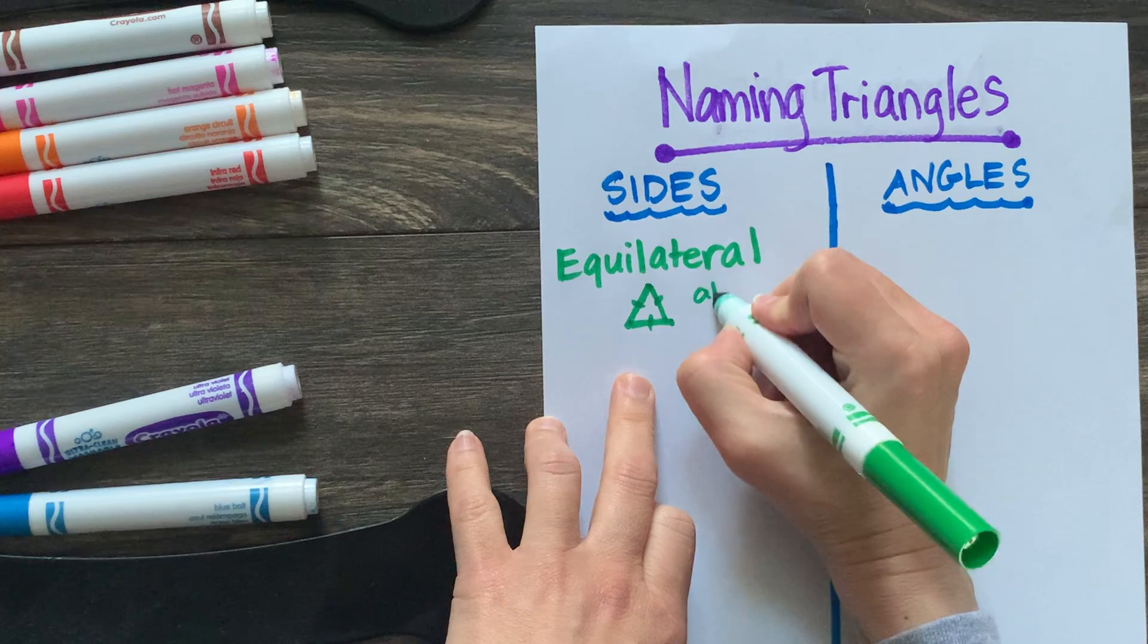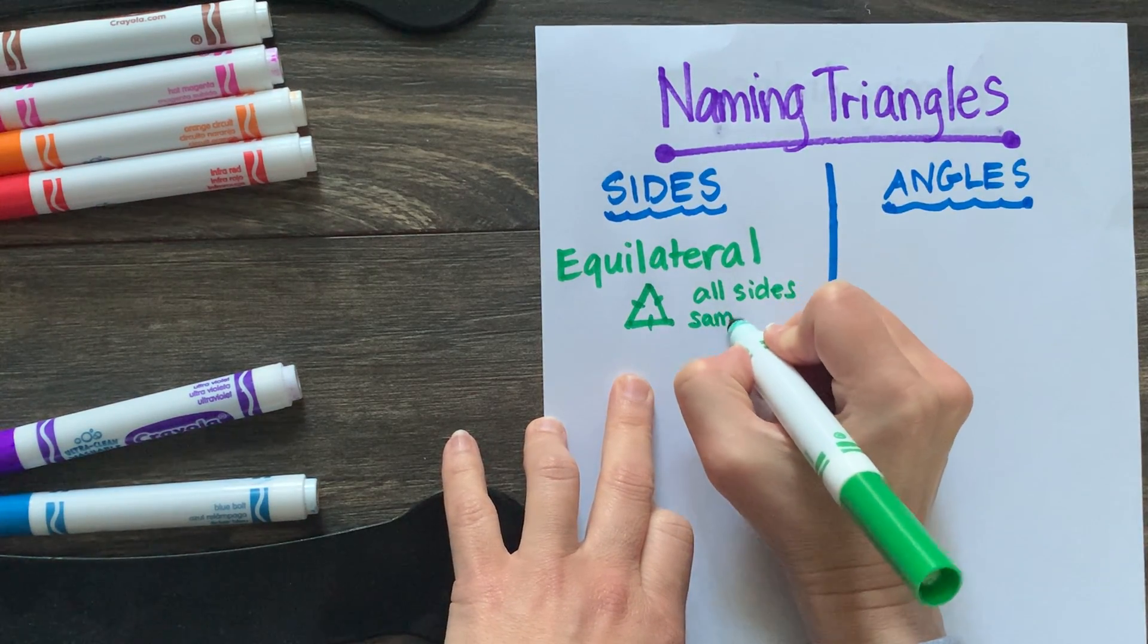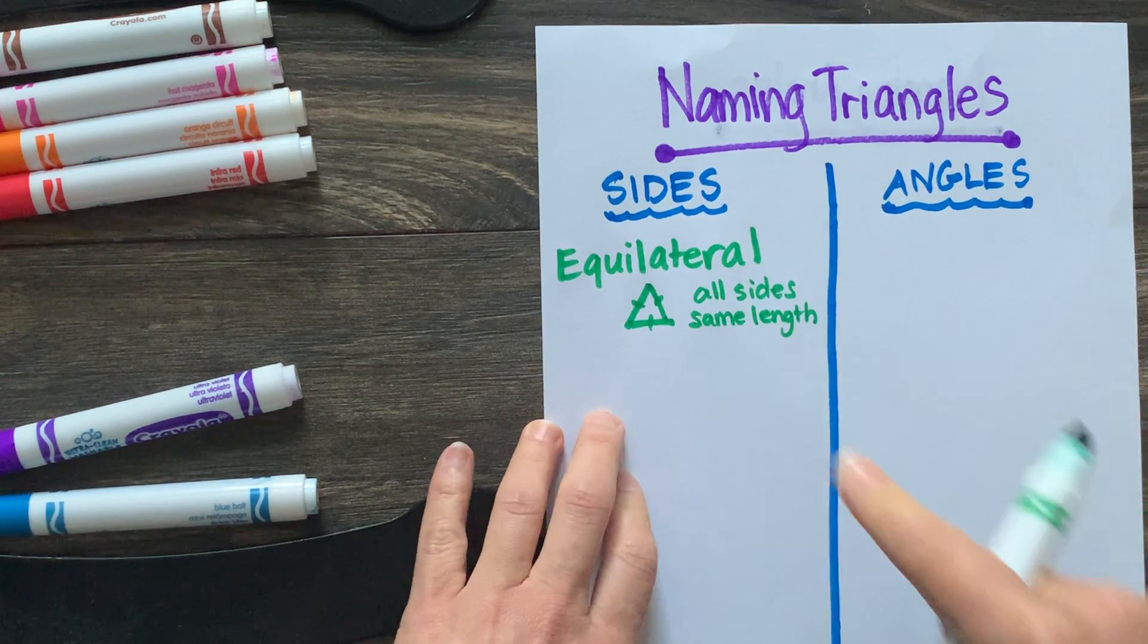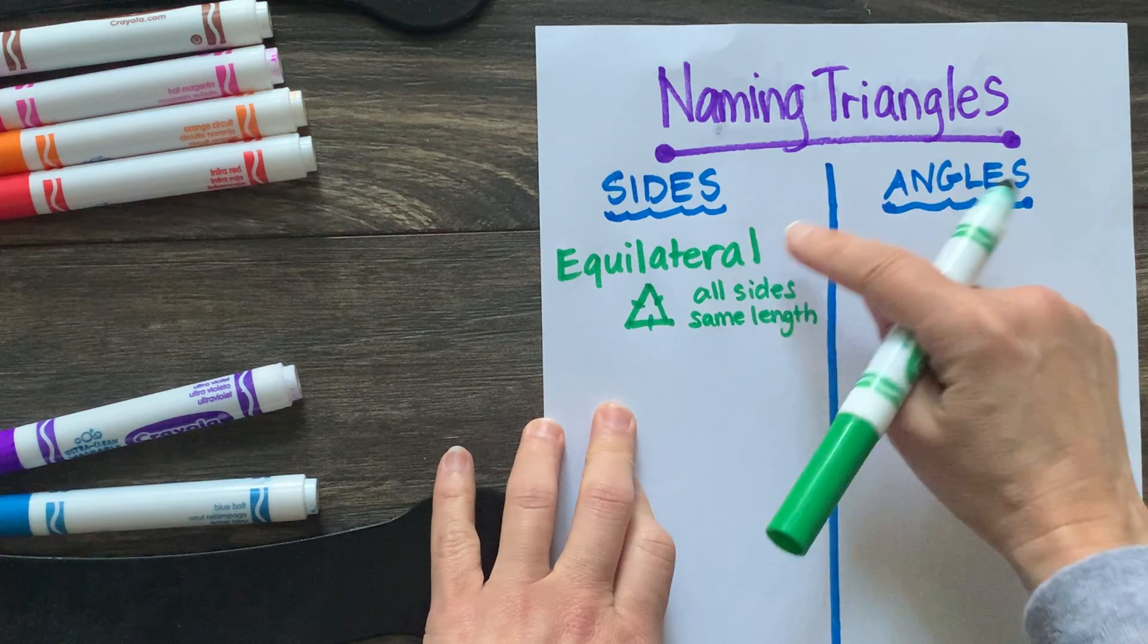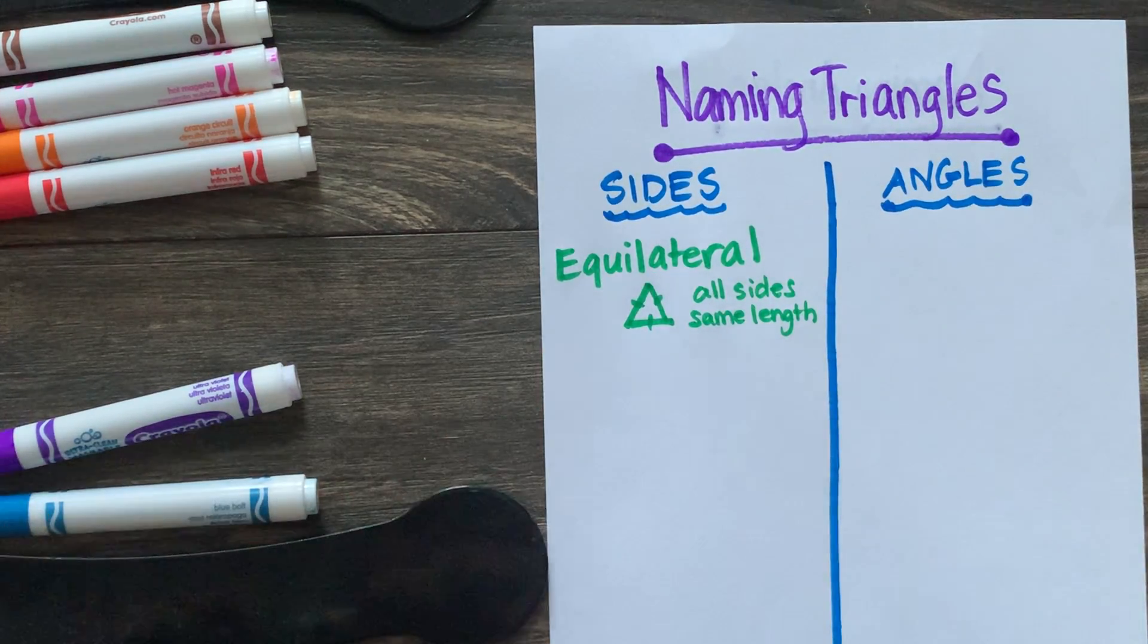So an equilateral triangle means all the sides are the same length. So all sides, same length. That's what makes it. And remember, we're only looking at sides here. So an equilateral triangle has all sides the same length. Let's move on.